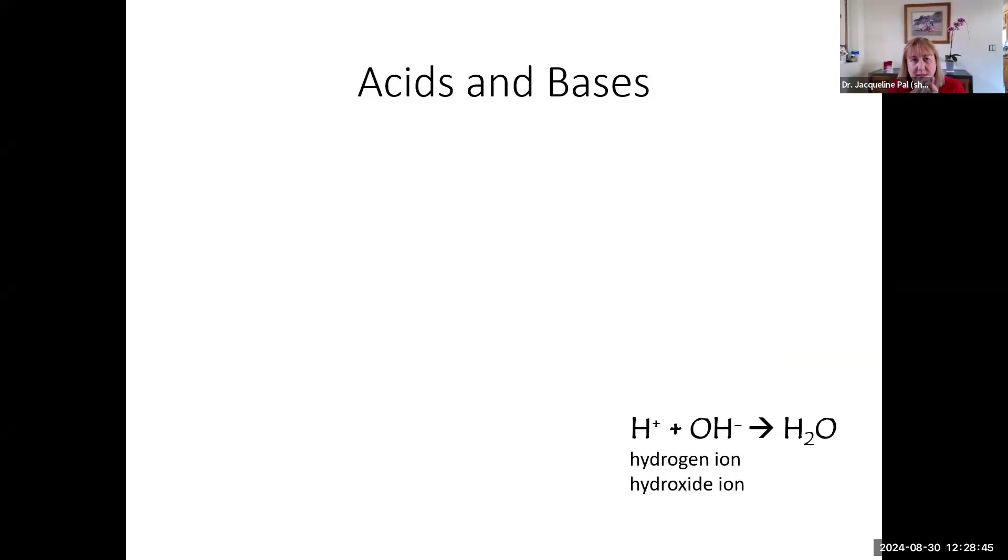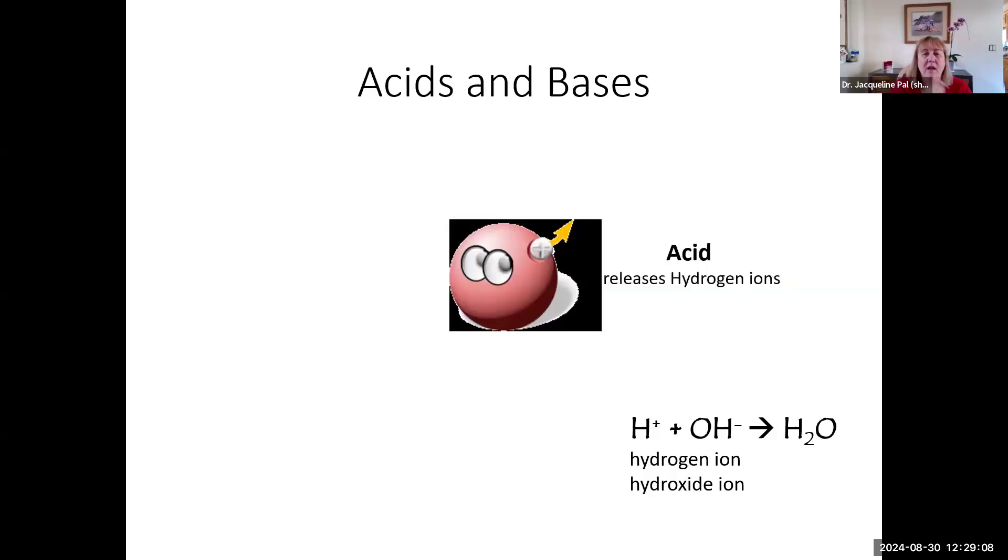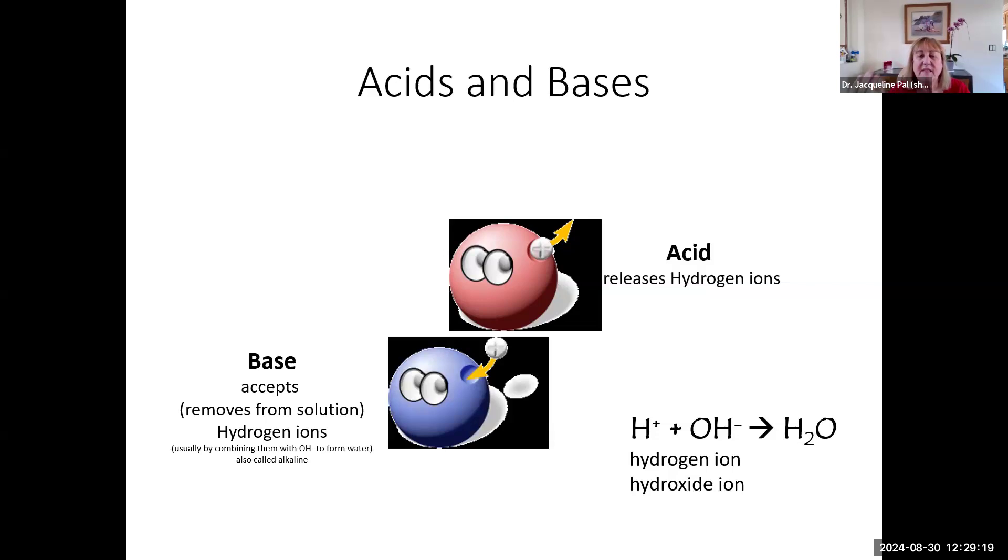Let's talk about acids and bases. Let's break down water into its two components: a hydrogen ion, which is hydrogen with a positive charge, a cation, and a hydroxide ion, which is oxygen and hydrogen together with a negative charge, an anion. An acid is defined in this course as anything that's going to be releasing hydrogen ions. A base is something that is going to be accepting those hydrogen ions from solution, usually combining them with a hydroxide ion to form water. Another synonym for a base is to say that something is alkaline.